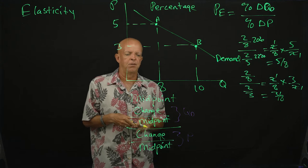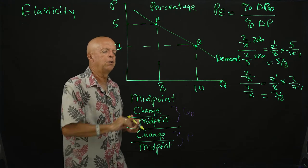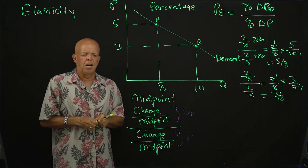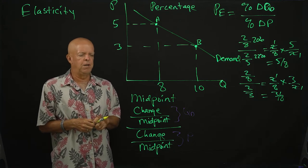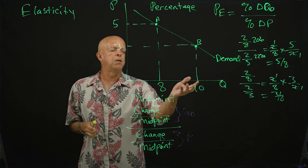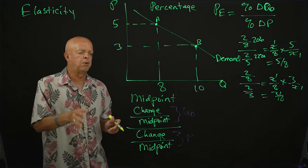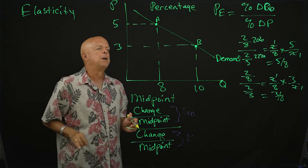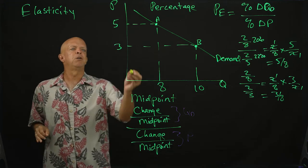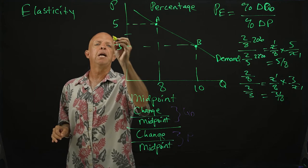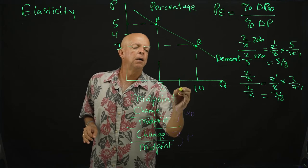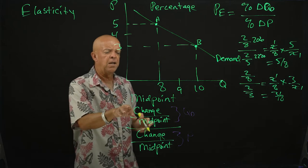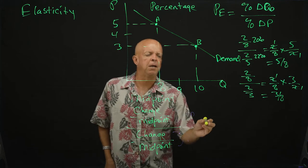And the way to do that is something called the midpoint method. Now your book has a kind of complicated way of doing the midpoint method with regard to Q1 and Q2. I always like to make it simple and consider the change over the midpoint. The midpoint is the middle point between the range. In this case, the midpoint is four and the midpoint is nine.